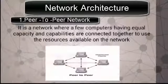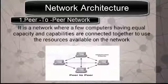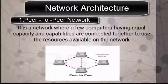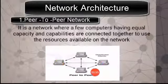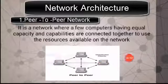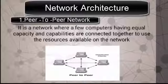In a peer-to-peer network, the computers are connected to use the resources available on the internet. There is no central hub. As we can see from this diagram, all the computers are connected to each other with no central hub. Instead, each computer can act as a server as well as a client.